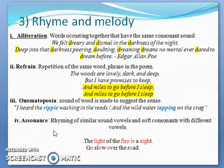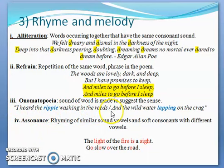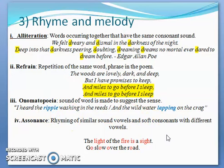Onomatopoeia means using words to create or imitate sounds. For example: 'I heard the ripple washing in the reeds and the wild water lapping on the crag.' Here 'lapping' and 'ripple' are words that create the sound of water. Other examples include the twittering of birds, splashing of water, 'he dashed,' 'zipped,' and 'buzzing' — all of these fall under onomatopoeia.